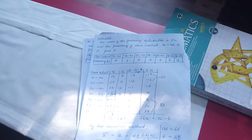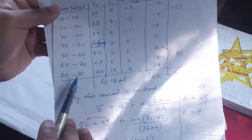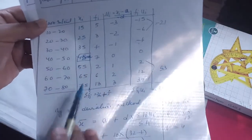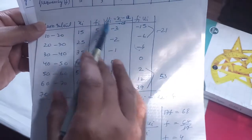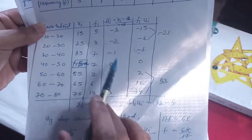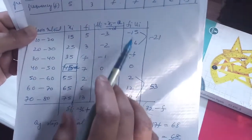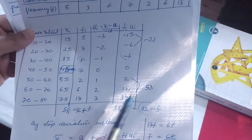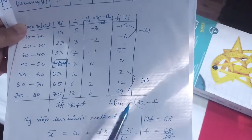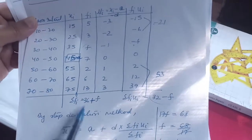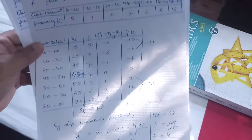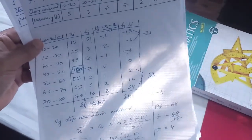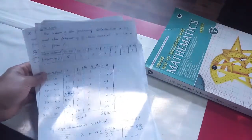So this is an important question type where you have a missing frequency. Everything is the same — the formula and step deviation method are unchanged. You convert class intervals to class marks, use the given frequencies, calculate ui following the sequence, find the summations separately (adding negatives and positives), and substitute into the formula.